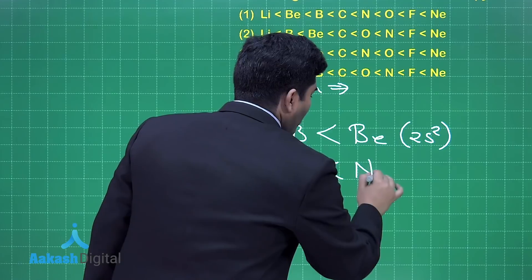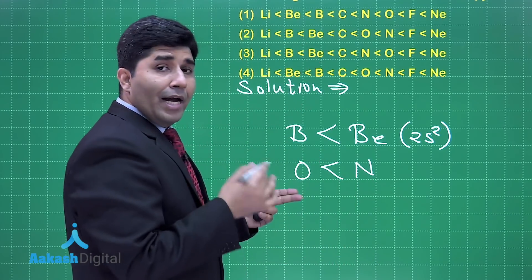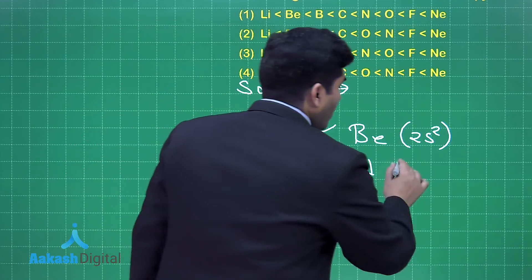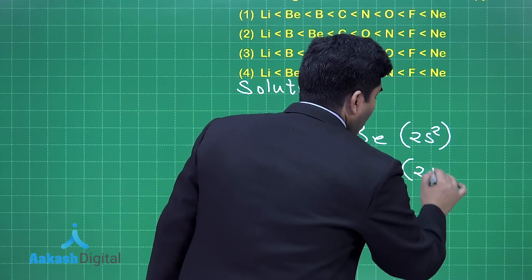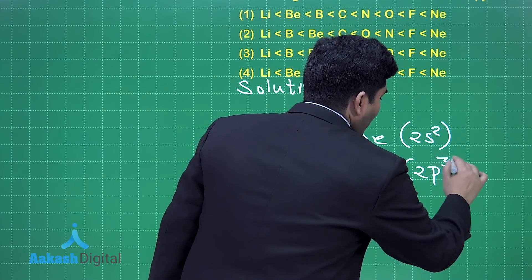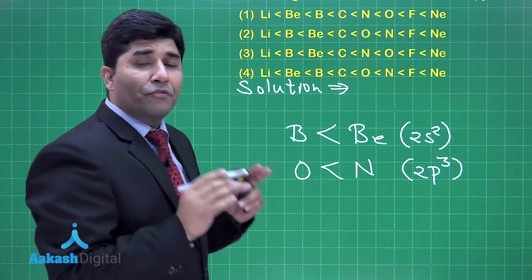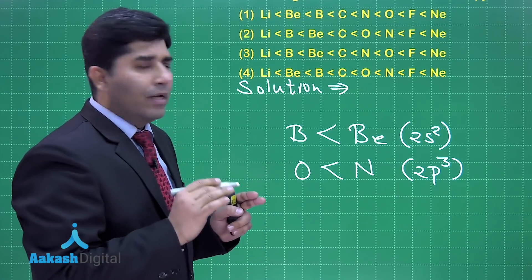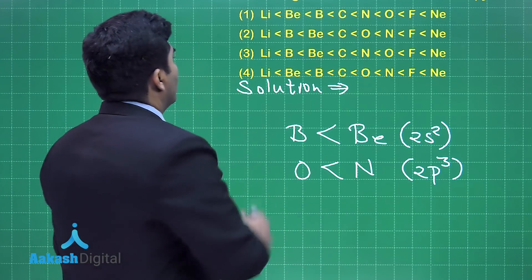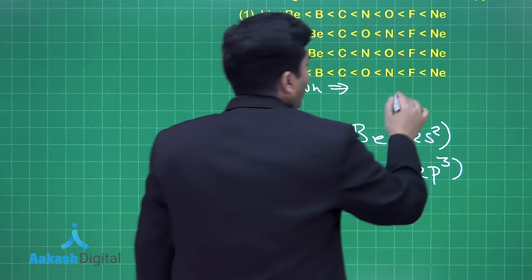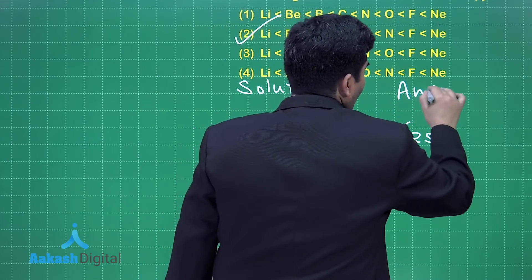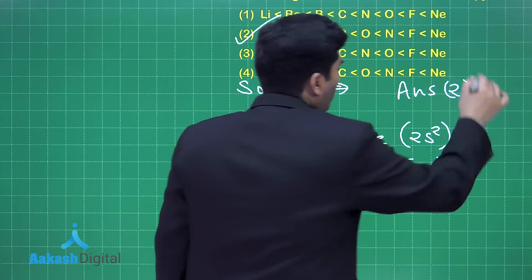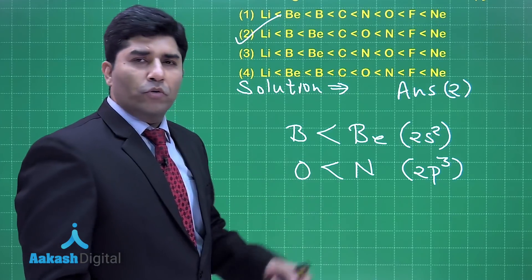The ionization energy of nitrogen is more than that of oxygen because the 2p subshell is half-filled, and half-filled subshells are stable. So the second option is the correct answer - option number 2.